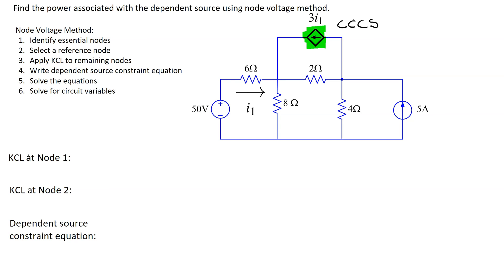Let's apply the node voltage method to solve this circuit. First, we need to identify essential nodes. Recall that essential nodes are points in the circuit where three or more circuit elements meet. In this given circuit, we have one, two, and three essential nodes.